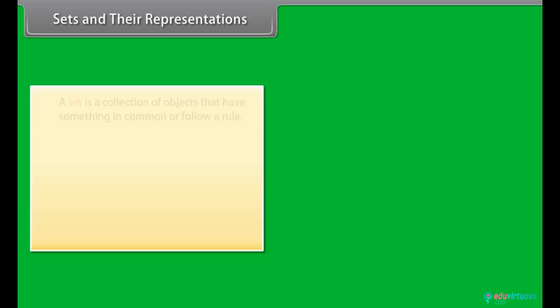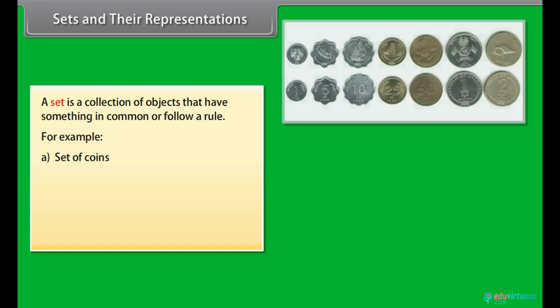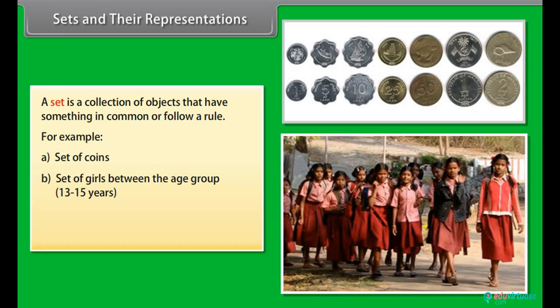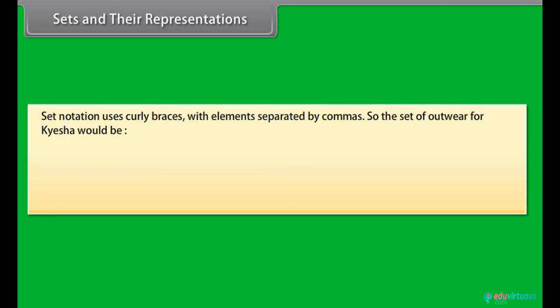Sets and their representations. A set is a collection of objects that have something in common or follow a rule. For example, set of coins, set of girls between the age group 13 to 15 years. The objects in a set are called its elements.